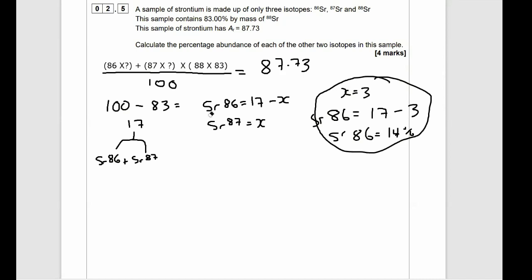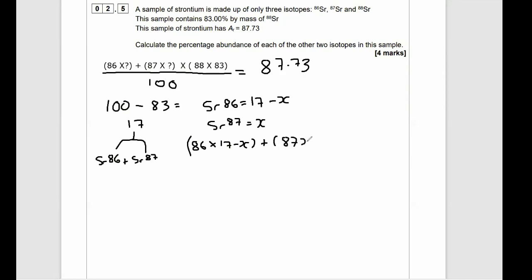However, that's not the case. So let's rub this out and get into working out what X is. So now we need to rewrite the expression by using 17 minus X for SR86 and multiplying 87 by X. So we have 86 times 17 minus X plus 87 times X plus 88 times 83. And all of this divided by 100 equals 87.73.